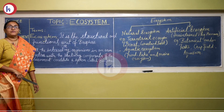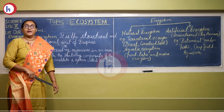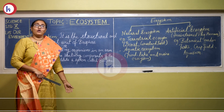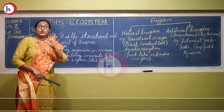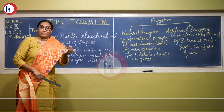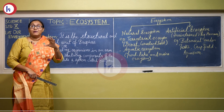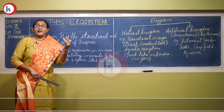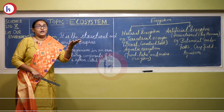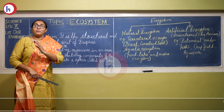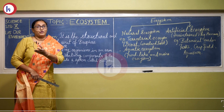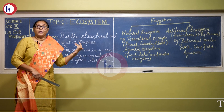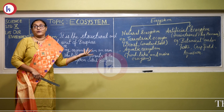Hello everyone. In the last lecture we studied the difference between biodegradable waste and non-biodegradable waste. How many of you at home help your mom in the kitchen by keeping two dust bins — one for biodegradable waste like vegetable peels, fruit peels, leftover food, and another for non-biodegradable waste like plastics, polythenes, and glass bottles. This way you can apply knowledge from this chapter at home.